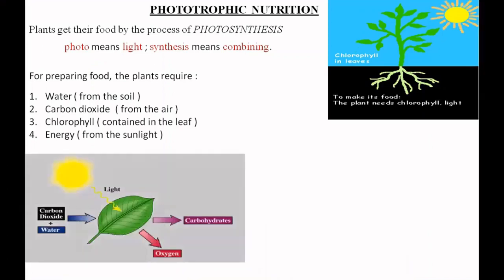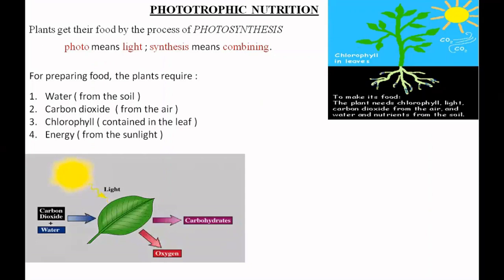The definition of photosynthesis is that it is a process by which green plants capture solar energy and use it to convert carbon dioxide and water into simple sugars, and then oxygen is released into the atmosphere.